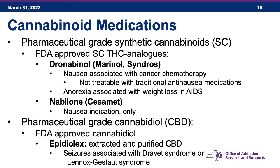There is pharmaceutical-grade cannabidiol, FDA-approved as Epidiolex — extracted and purified CBD from the plant. Its indication is for seizures associated with Dravet syndrome or Lennox-Gastaut syndrome, which are uncommon but very severe seizure disorders, usually occurring in children who can have hundreds of seizures in one day. Epidiolex doesn't cure these syndromes but drastically reduces the number of seizures a child or adolescent will have each day.